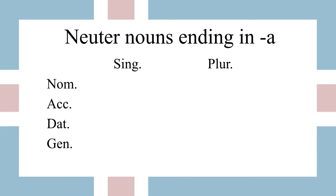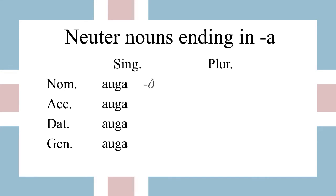Let's go on to the neuter nouns that end in A. Most of these are body parts. The one we'll be looking at is auga, meaning eye. We have nominative auga, accusative auga, dative auga, and genitive auga. And then with the definite article ending we have augað, augað, augaðnu, and augaðns.